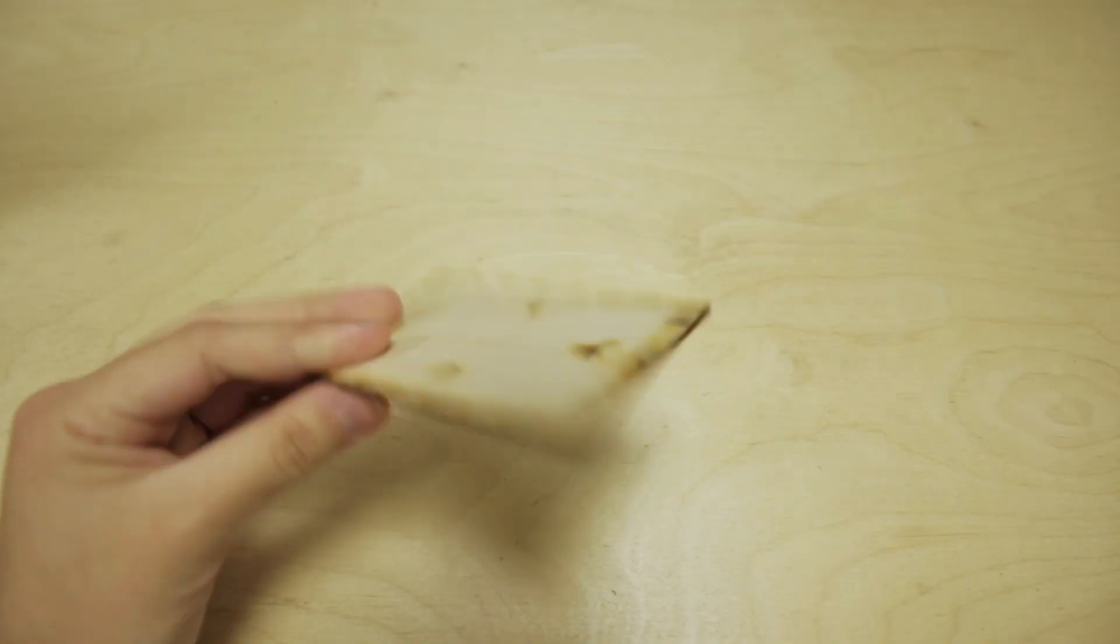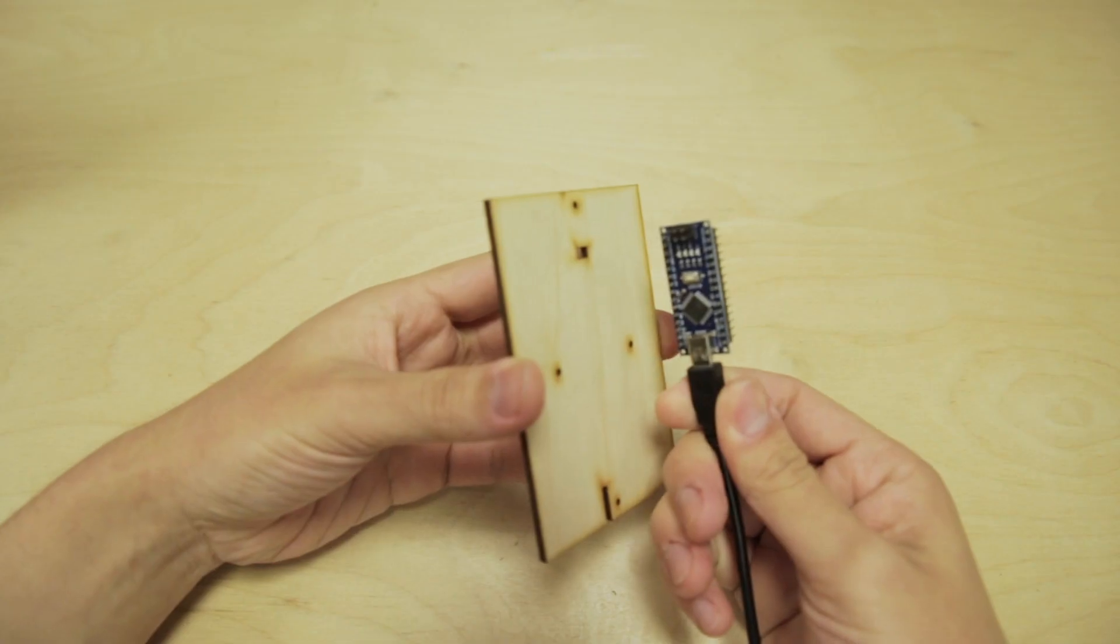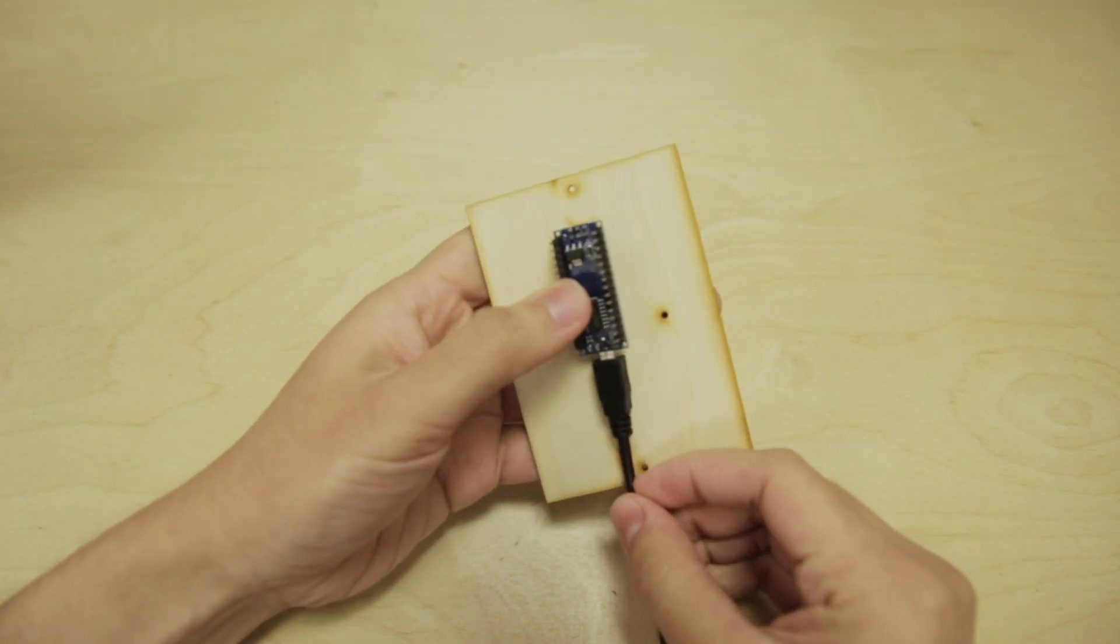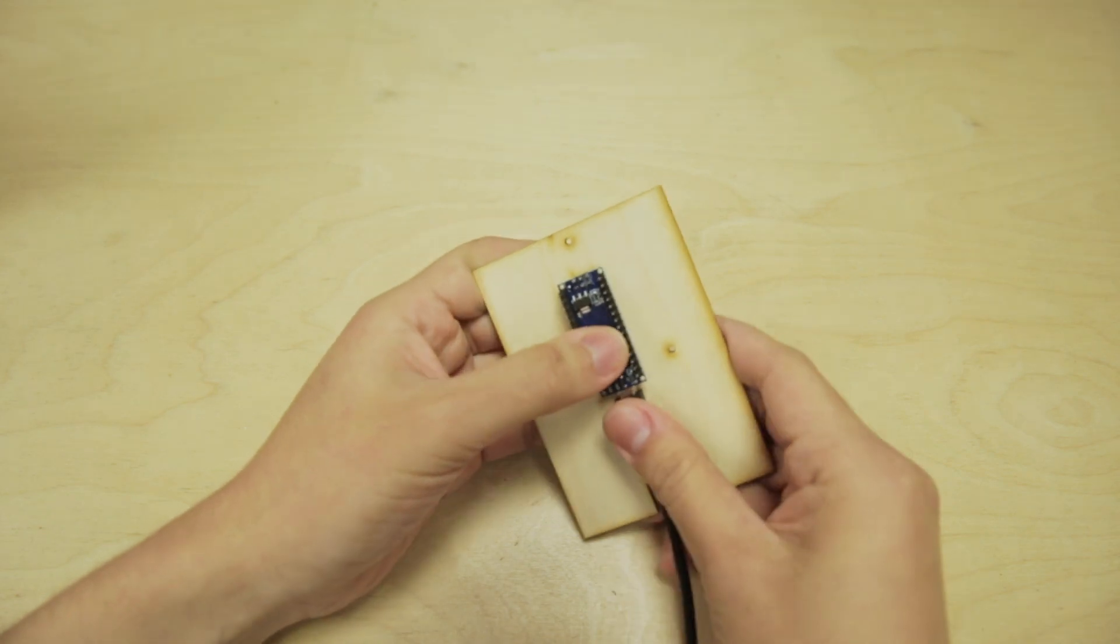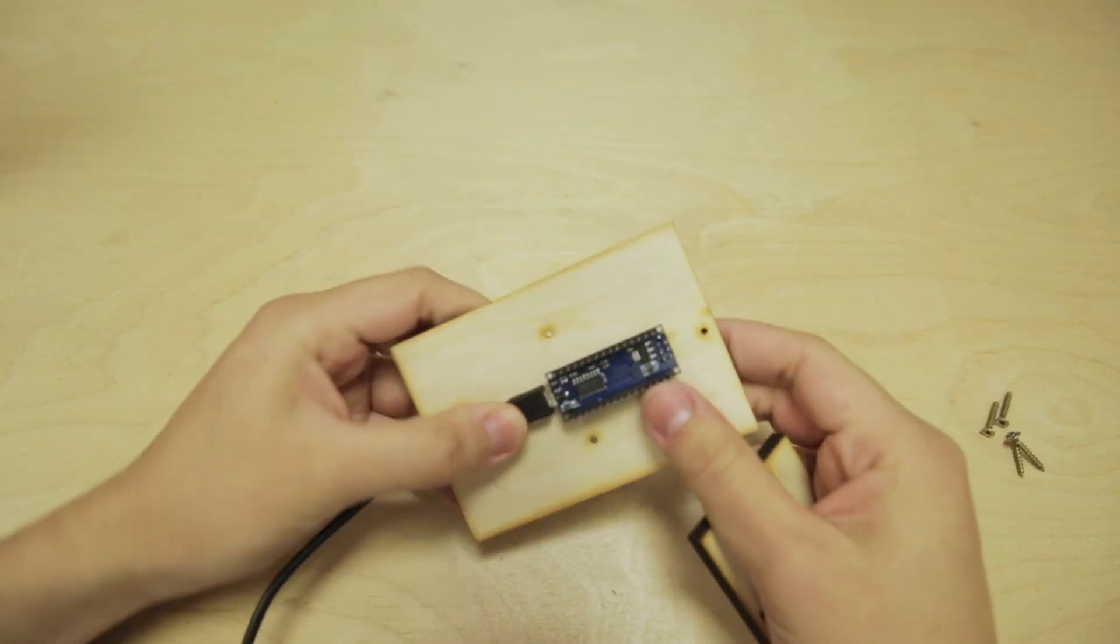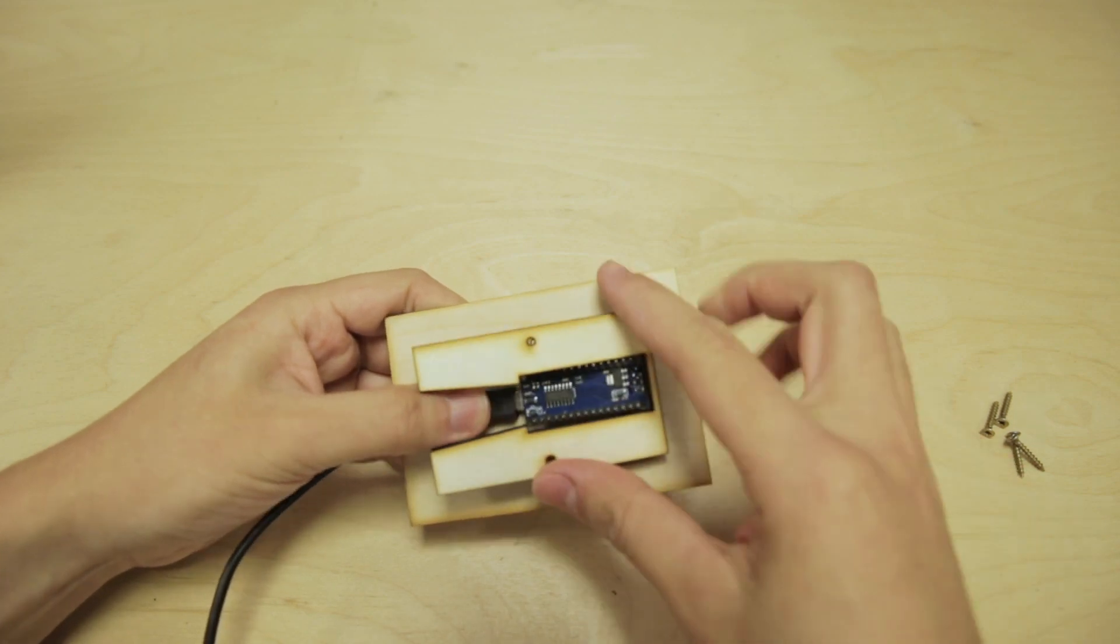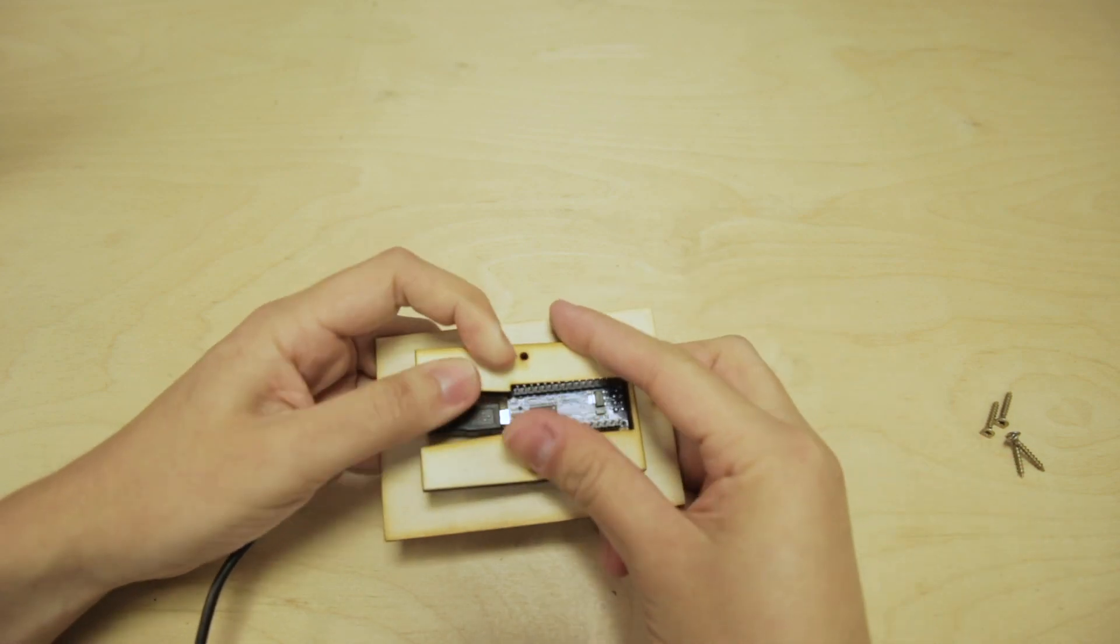Then take this piece of laser-cut plywood. There's a hole that will line up with some of the pins. Line that USB cable up with the notch at the bottom. And once again with the pins lined up with the hole, take this piece of plywood and slide it over top of the controller so it fits in place.